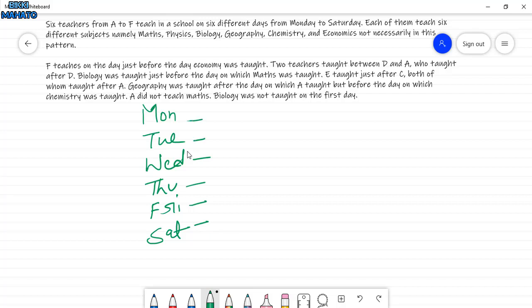Now, our question is F teaches on the day just before the day economy was taught. These are small points which we can keep on the side. So F teaches just before the day economy, which means the day after F, economy is taught. Two teachers taught between D and A. So D and A with two persons in the middle. This is our point two and this is point one.